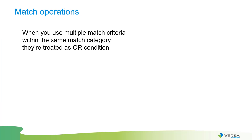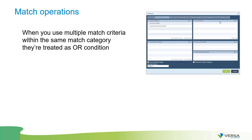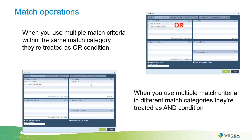For match operations: when you use multiple match criteria within the same match category — for example, source prefix one and source prefix two — this is treated as an OR condition. Either prefix can trigger the match. But if you select conditions in two different windows — for example, something in source address and something in source zone — they work as an AND condition. Both must match simultaneously. This applies to all match conditions across all categories.